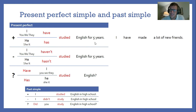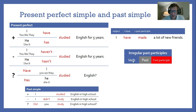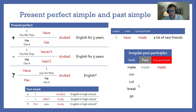Look at this sentence: I have made a lot of new friends. 'Studied' is easy because it just adds 'ed', but in past simple we have irregular past forms. This is a past participle, which is slightly different to an irregular past verb form. We have the normal verb 'make', the past 'made', and the past participle which is also 'made'. But not always — for example: run, cut, break, go.